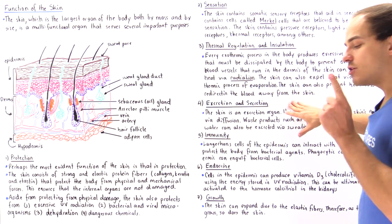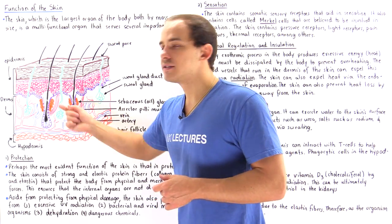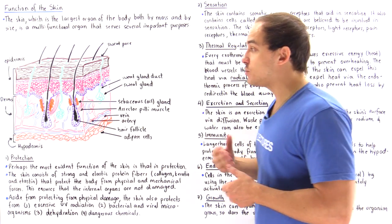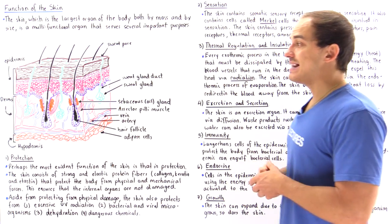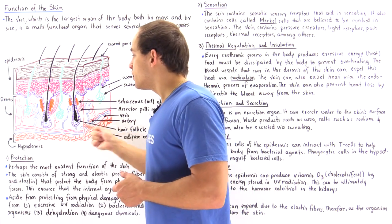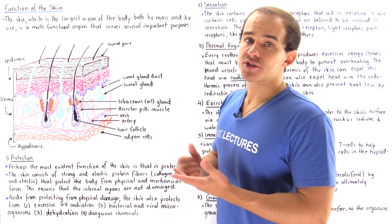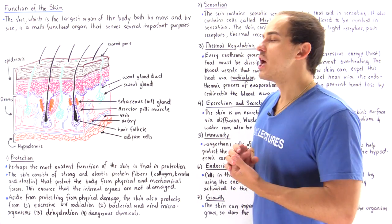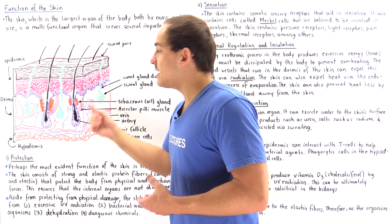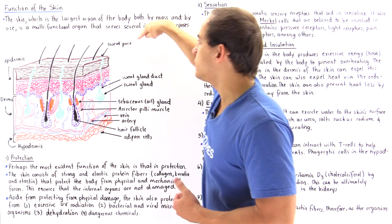Function number four is excretion as well as secretion. Not only can the kidneys excrete waste products, ions, and water, but the skin can also excrete these molecules. Sweat glands produce sweat consisting of water, waste products such as urea, and ions such as sodium. These sweat glands secrete and excrete this substance onto the surface via sweat pores.